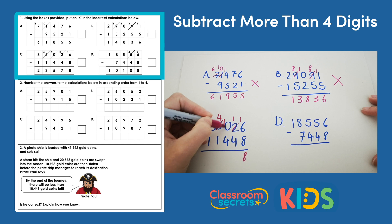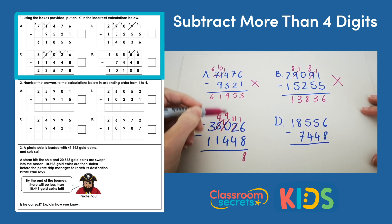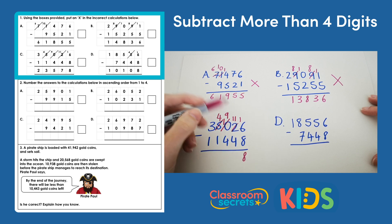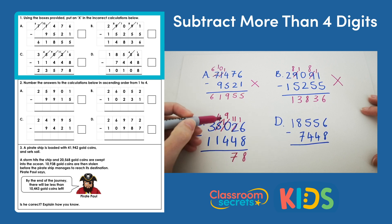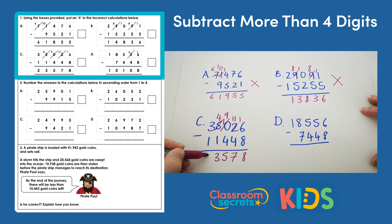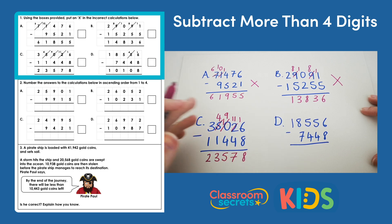From the thousands column we can do an exchange, and then we can exchange that for a 1, a 10, a 10. So then we do 11 subtract 4, which gives us 7; 9 subtract 4 is 5; 4 subtract 1 is 3; and 3 subtract 1 is 2 — so we get 23,578. Our answer matches the answer on the sheet, so we don't need to put an X in the box.